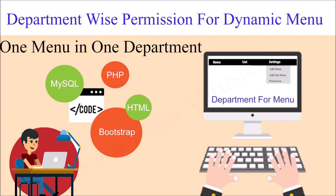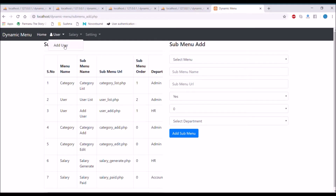For example, you have admin, HR, and accounts departments. Whichever menus are assigned to a department, users will only be allowed to see those menus that belong to their particular department. So only those menus will be visible in their navigation. Let me show you a demo.